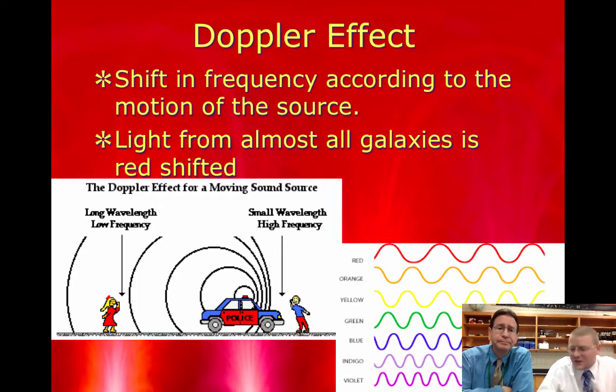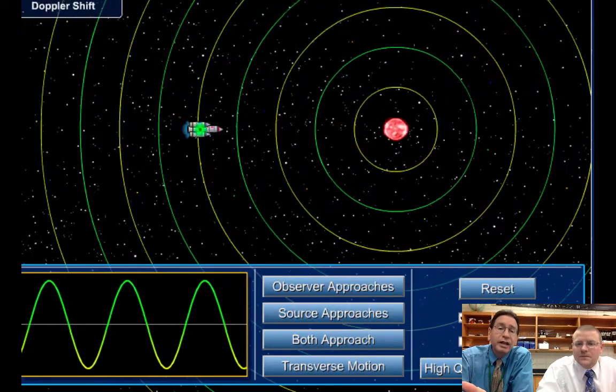And you can hear the pitch of that sound drop as it passes. So the siren is always giving off the same noise, but if that siren heads towards you, the waves are bunching together, which gives higher frequency or higher pitch. And if it drives away from you, the waves are seemingly spreading further apart, and so the pitch drops.